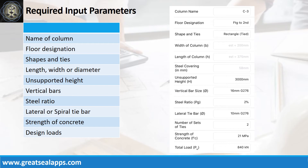Enumerate input parameters required. Column name: C3. Floor designation: footing to second. Shape and ties: rectangle, tied. Unsupported height: 3,000 mm. Vertical bars: 16 mm bar at grade 276. Steel ratio: 2%. Lateral tie bars: 10 mm bar at grade 276. Strength of concrete: 21 MPa. Factored actual load: 840 kN.